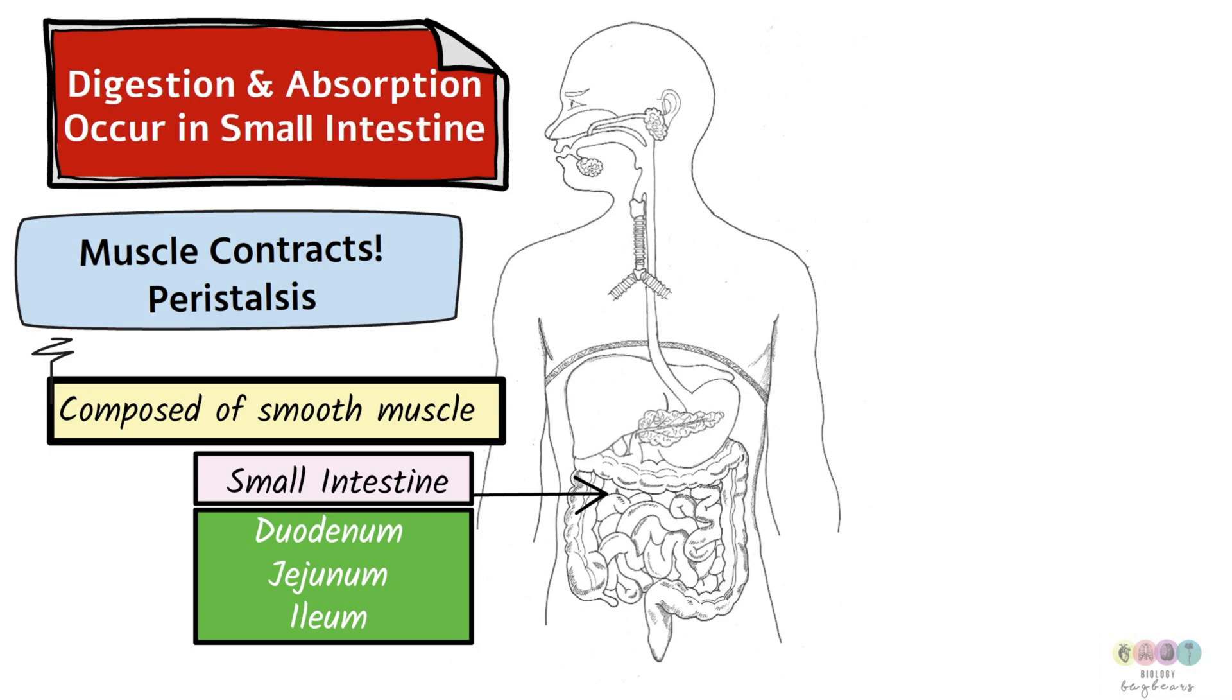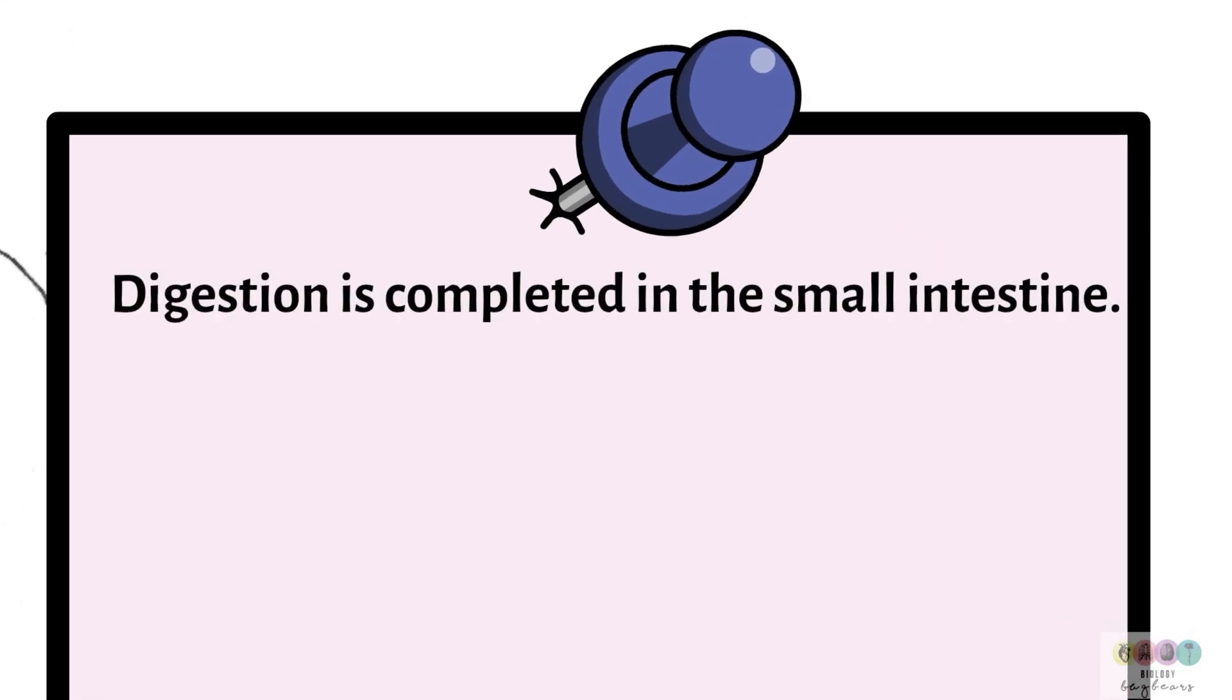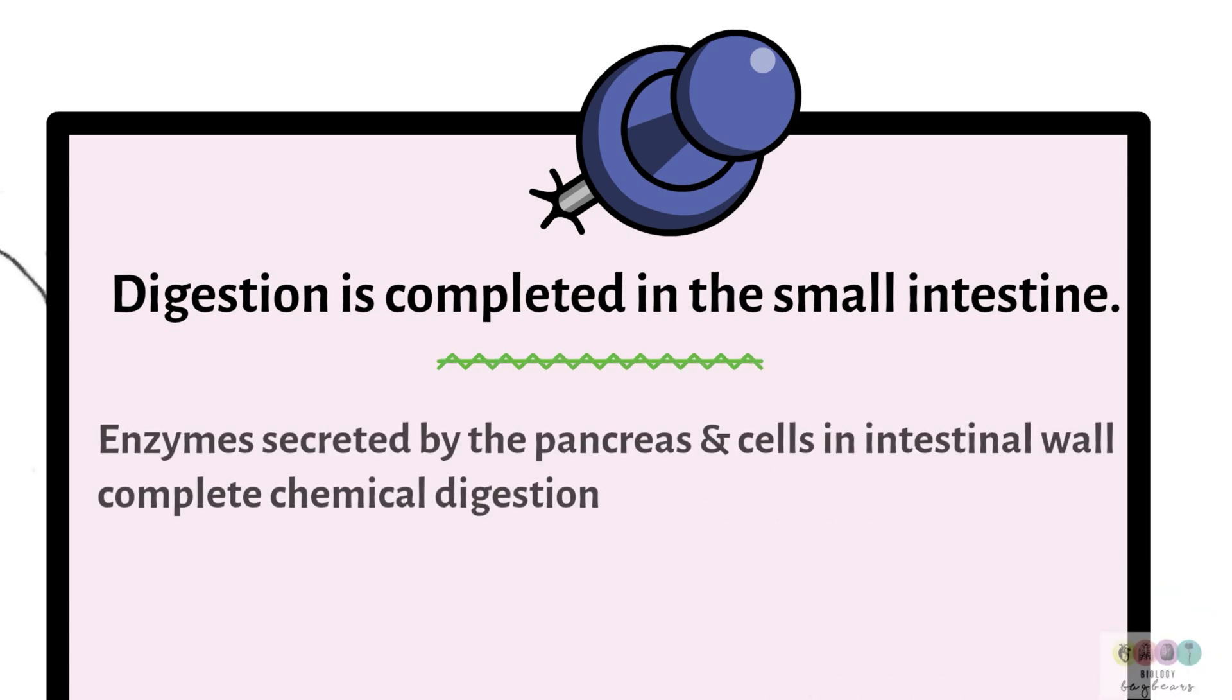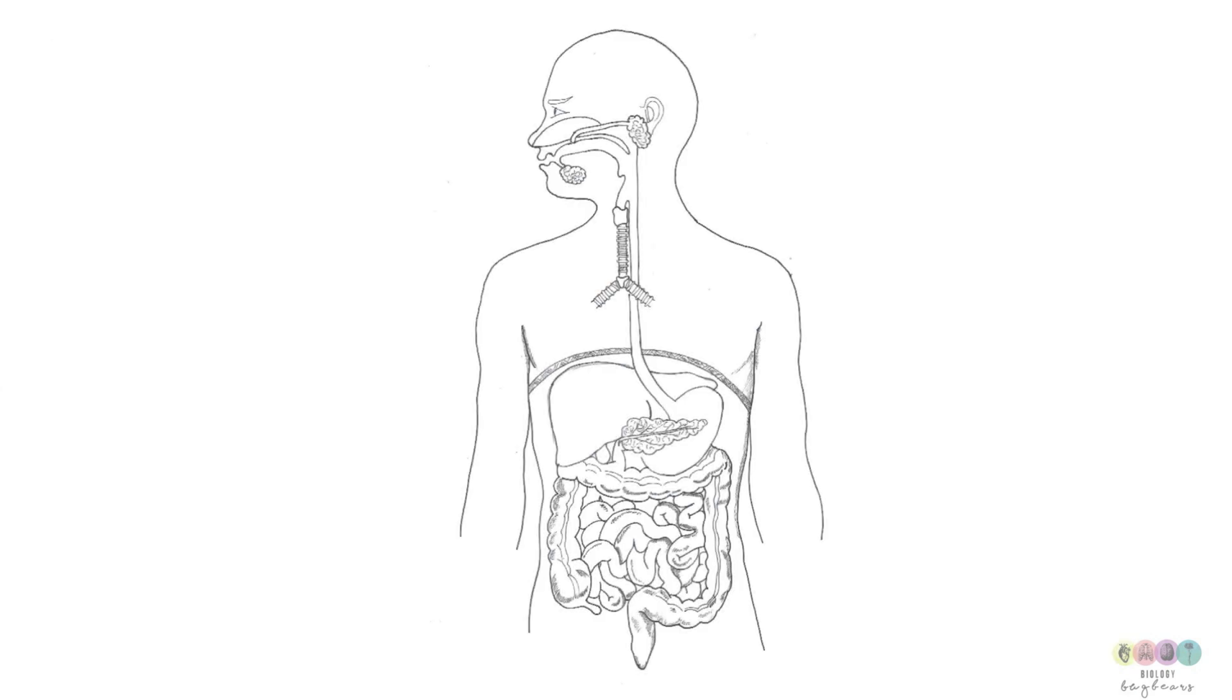Digestion and absorption occur in the small intestine. So both of these processes. Digestion is completed in the small intestine. And it's largely by the action of enzymes. Enzymes that are secreted by the pancreas and also enzymes that are secreted by cells in the intestinal wall. At the end of all of this chemical digestion, the products of digestion are monosaccharides such as glucose, amino acids and fatty acids and glycerol. The monosaccharides, they're carbohydrates. The amino acids came from proteins. And the fatty acids and glycerol from lipids.